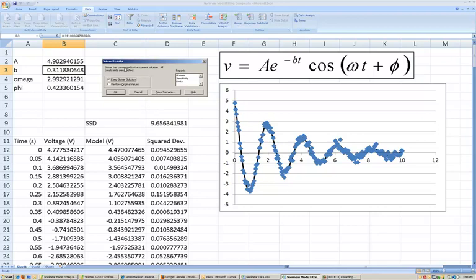It's going to give you a pop-up box saying I found a solution. Do you want to keep the solution? And what that means is, do you want me to permanently change the values of A, B, Omega, and Phi to be consistent with the values that I use to find the minimum sum of squared deviations. And, of course, you want to keep that, so you say, okay.